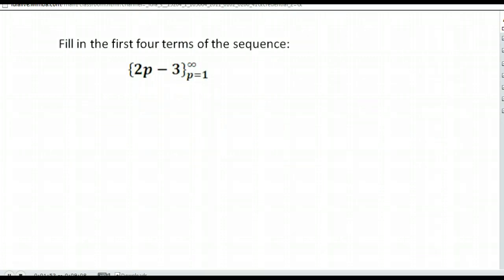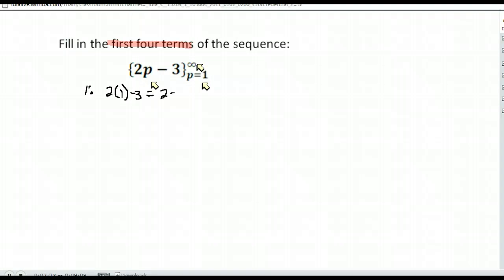Here's the second example. This is written a little bit differently. Here's the formula we're supposed to use — we go two times p minus three. This tells us to start at p being one, and we could continue until infinity, but they only asked us to do the first four terms. Starting where p is one, we have two times one minus three, or two minus three, which is negative one. So the first term in our sequence would be negative one.